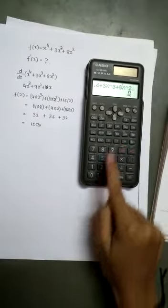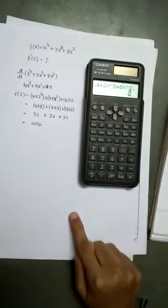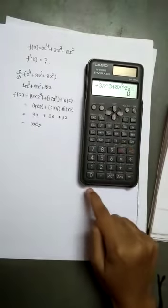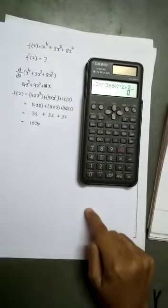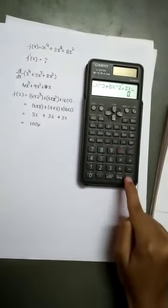Now don't close the bracket. Put comma, now click 2. Close bracket. You get answer as 100.